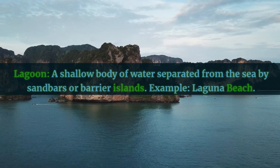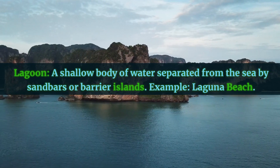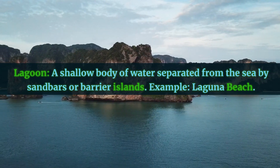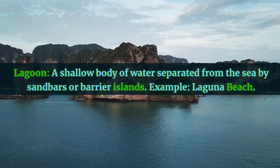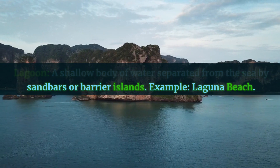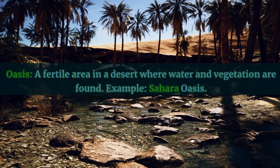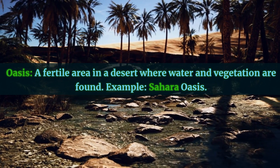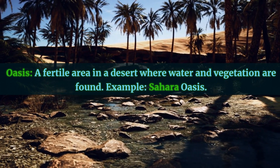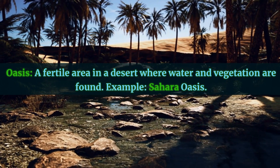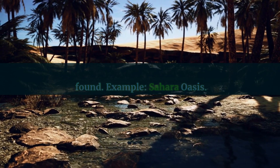Lagoon: a shallow body of water separated from the sea by sandbars or barrier islands. Example: Laguna Beach. Oasis: a fertile area in a desert where water and vegetation are found. Example: Sahara Oasis.